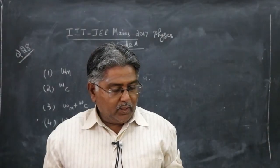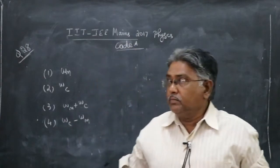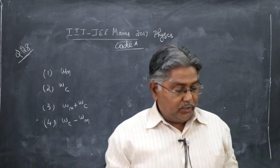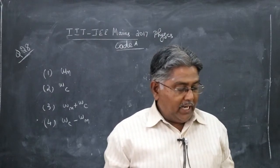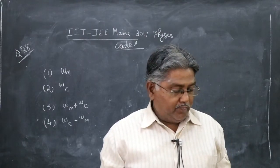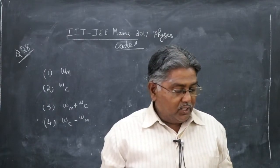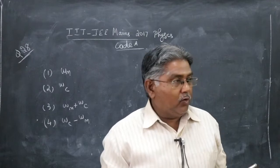Next question, question number 28. In amplitude modulation, sinusoidal carrier frequency used is denoted by omega c and the signal frequency is denoted by omega m.